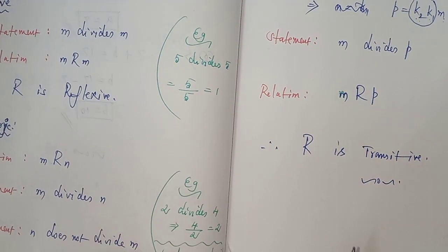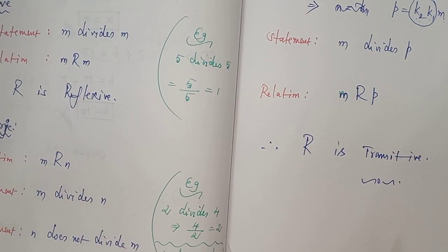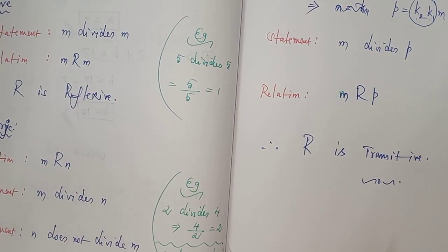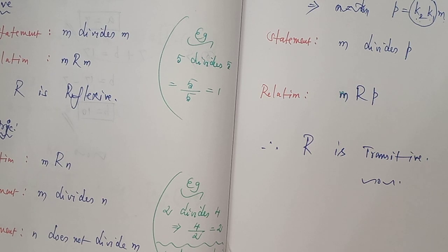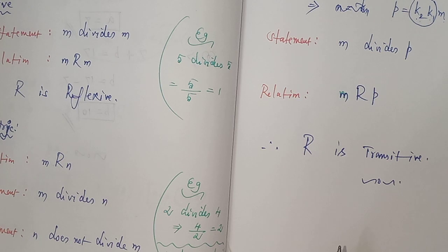So to summarize: R is reflexive, R is not symmetric, and R is transitive. Problem number one, subdivision one is completed. I will be teaching the next problem — subdivision two — in the next video. Thank you, children.